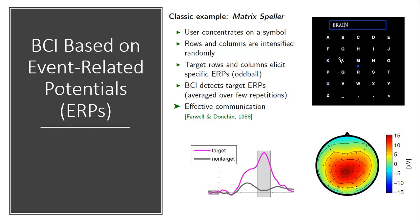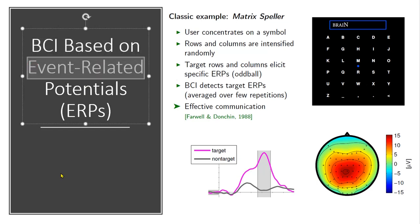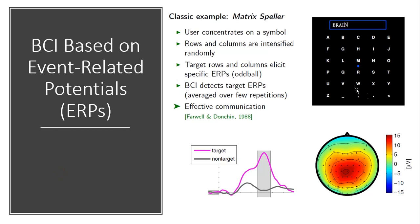You focus and pay attention to a specific letter — for instance, you want to type 'N'. You look at it, pay attention to it, and generate a brain response locked to that event when the corresponding column and row is intensified. The target column and row elicits a detectable event-related potential, and the task of the BCI is to detect these event-related potentials.